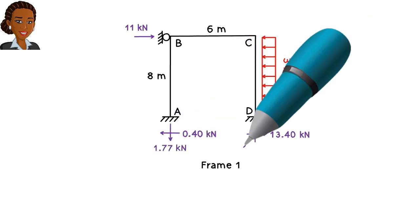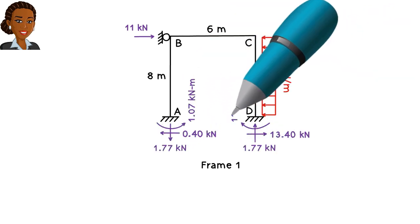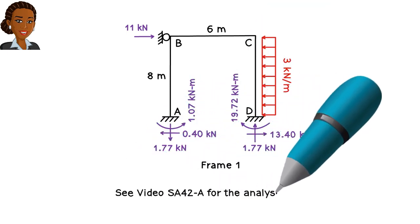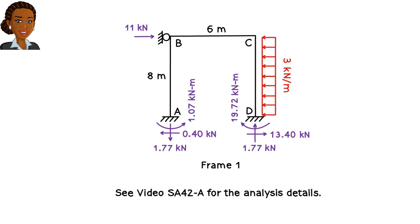Note the horizontal reaction at B. Its magnitude is 11 kilonewtons. This means R equals 11 kilonewtons.